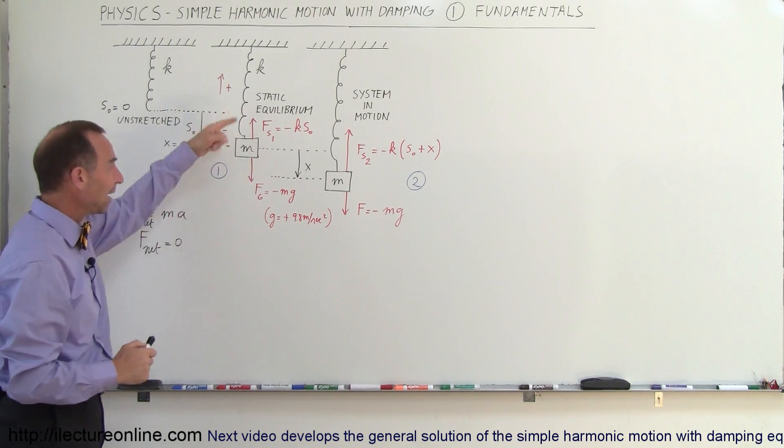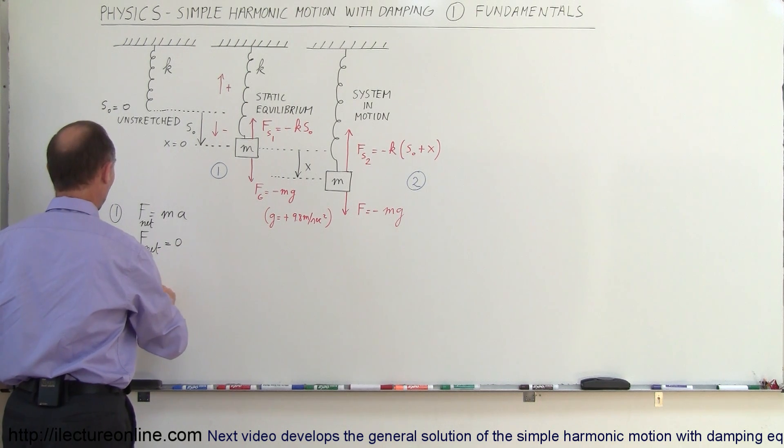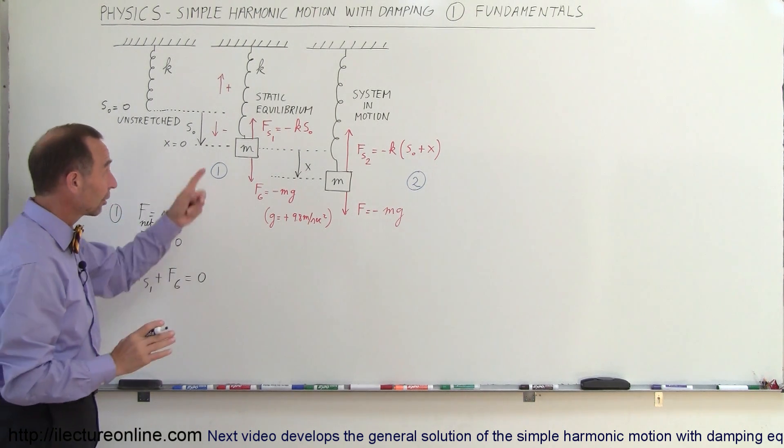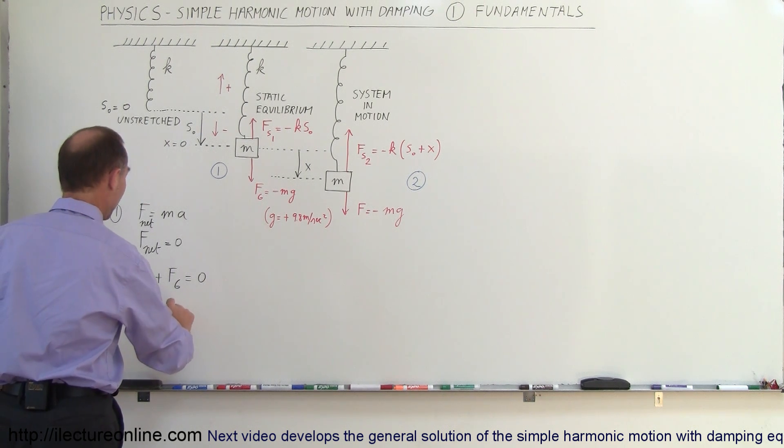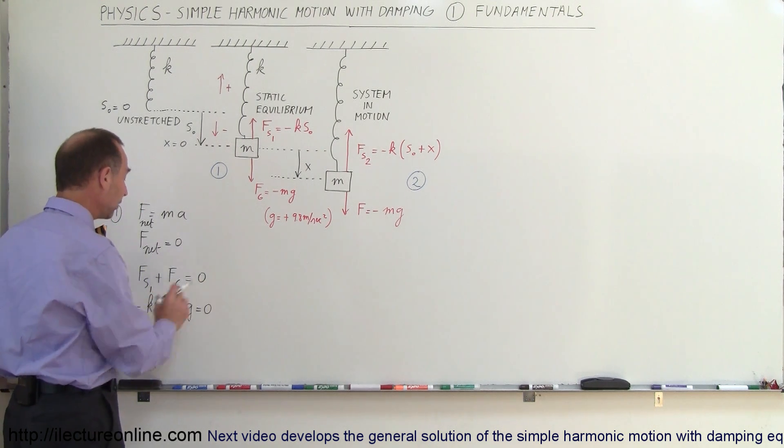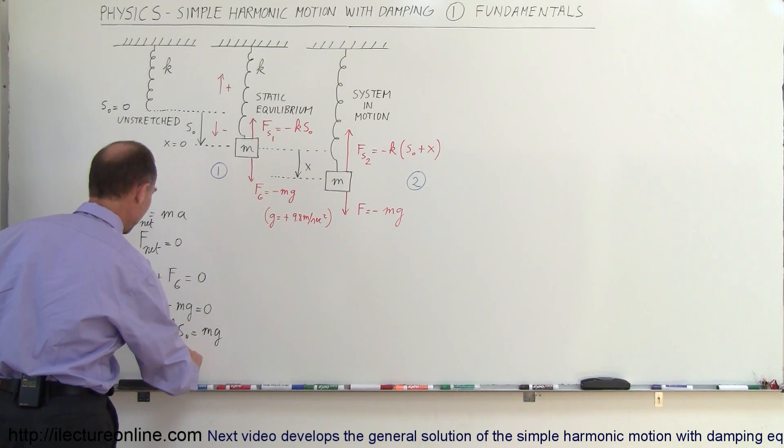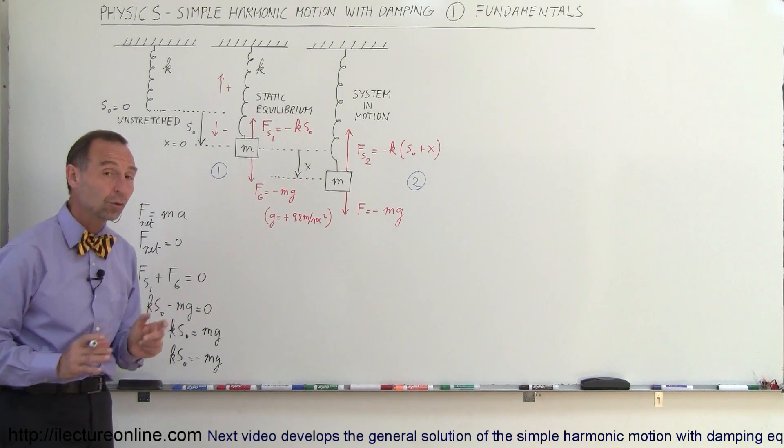Now when we find the net force, we have to add those two together. So f s sub one plus f due to gravity is equal to zero. If we place the quantities in there, we can say that minus k s sub naught minus mg is equal to zero. Then we can move one of them to the other side. We can say that minus k s zero is equal to mg, or k s zero equals minus mg. So that's the static situation.